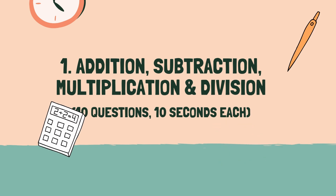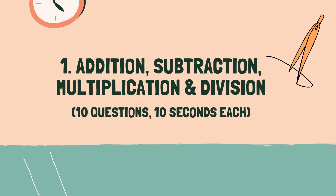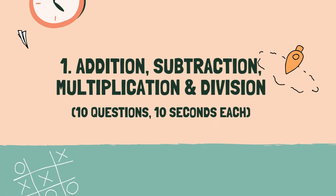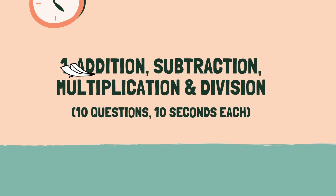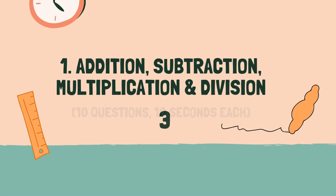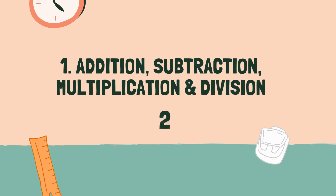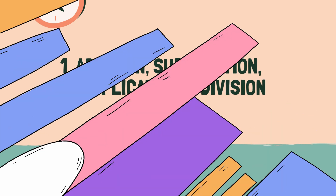Category 1: Addition, subtraction, multiplication, and division. 3, 2, 1, go.